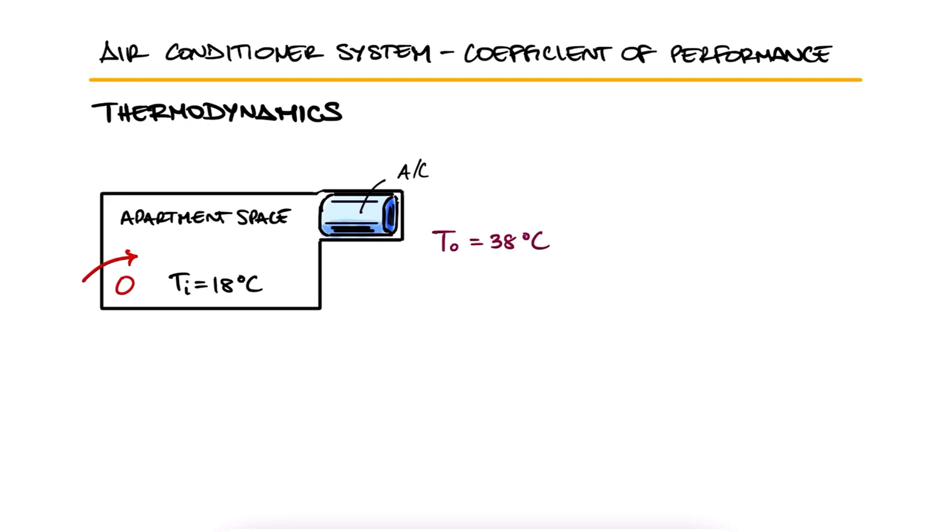The total heat gain to the apartment's interior is estimated to be 2600 kJ per hour and the heat rejection in the condenser is 4400 kJ per hour.